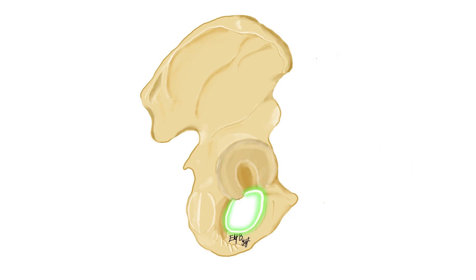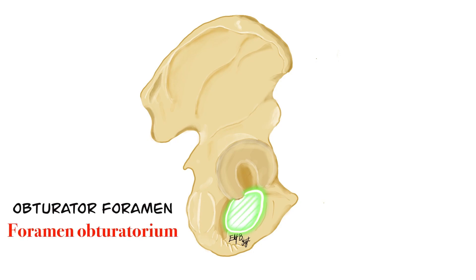Antero-inferior to the acetabulum, there is a hole called the obturator foramen, or foramen obturatorium in Latin. This hole is covered by a membrane called the membrana obturatoria. Obturate means closed, so because it is closed by the membrana obturatoria, this foramen is known as foramen obturatorium.